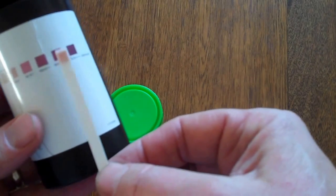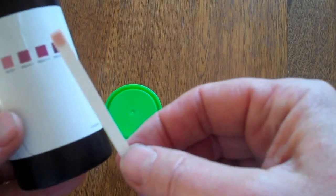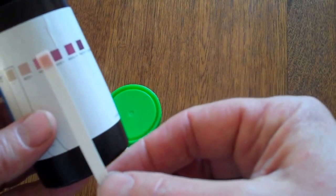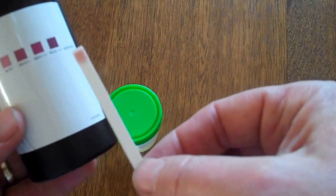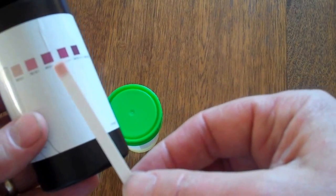Now the darker the shade of purple that's developed over a two minute period, the more ketones are in the urine sample, and you will by matching the pad color to one of these predetermined color pads get a semi-quantitative result.